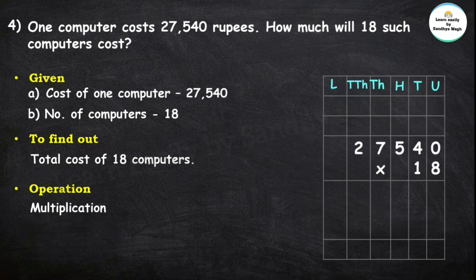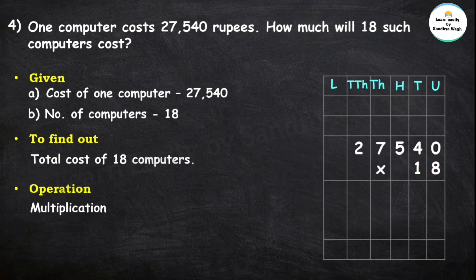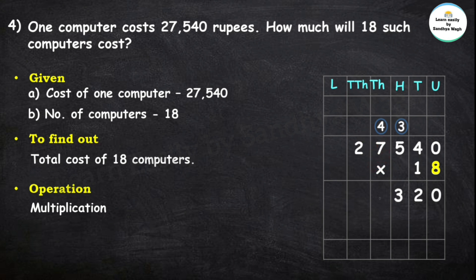Our multiplicand is 27,540 and the multiplier is 18. Multiply by 8: 8 zeros are 0; 8 fours are 32 — write 2, carry 3. 8 fives are 40 plus 3 is 43 — write 3, carry 4. 8 sevens are 56 plus 4 is 60 — write 0, carry 6. 8 twos are 16 plus 6 is 22.